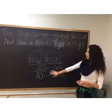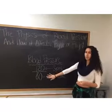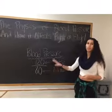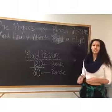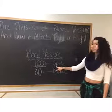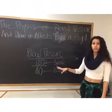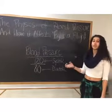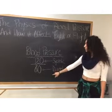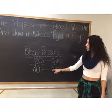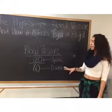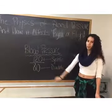Blood pressure can be written like this with two numbers — for example, 120 over 80. Blood pressure is the pressure we find in the walls of our arteries. The systolic pressure is the pressure found when the ventricles of the heart contract, which is why we have a higher number. The diastolic pressure is the pressure in the arteries when the ventricles of the heart relax, which is why we have a lower number.